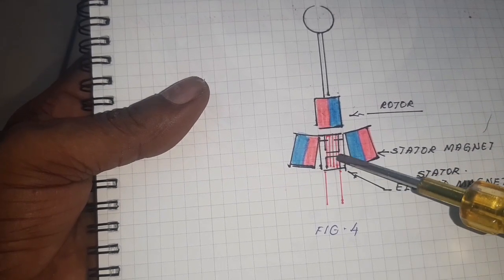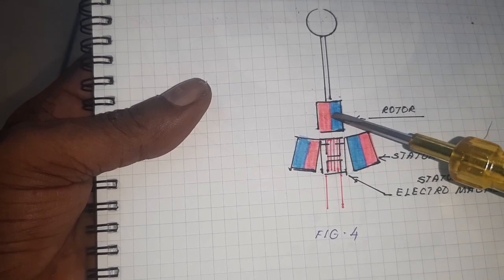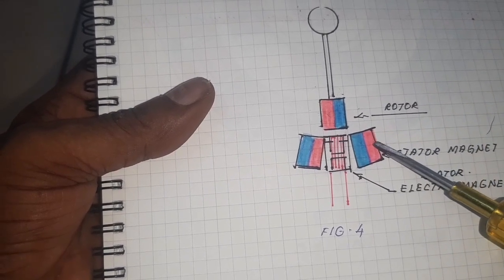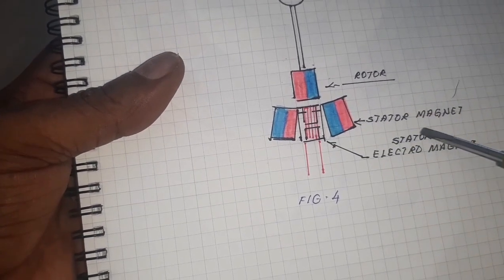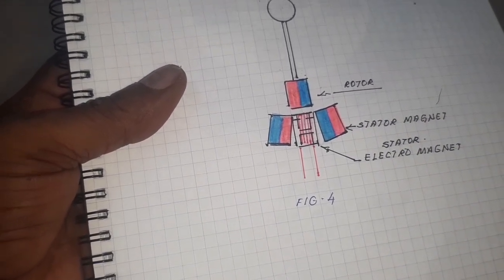Once again I switch off the electromagnet. The rotor magnet moves to the right-hand side of the permanent magnet. So this is the concept I have used in the BLDC motor.